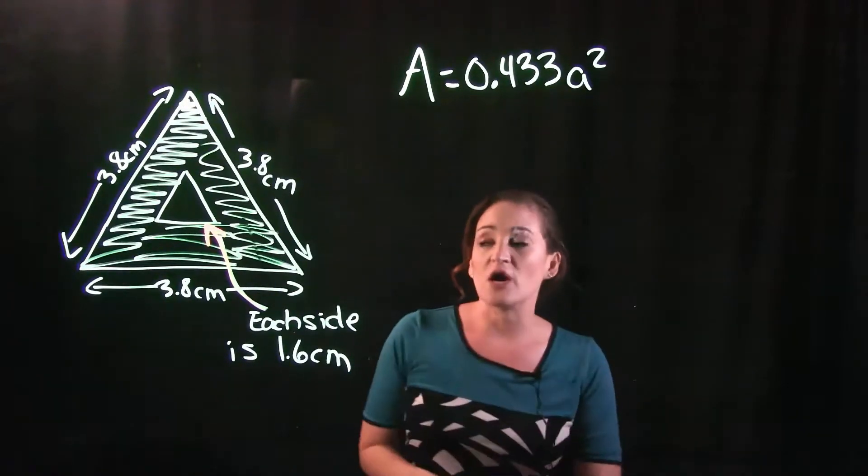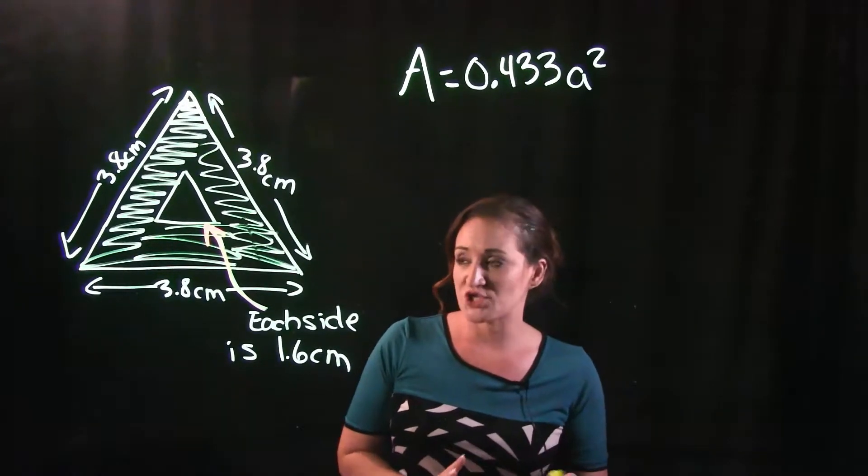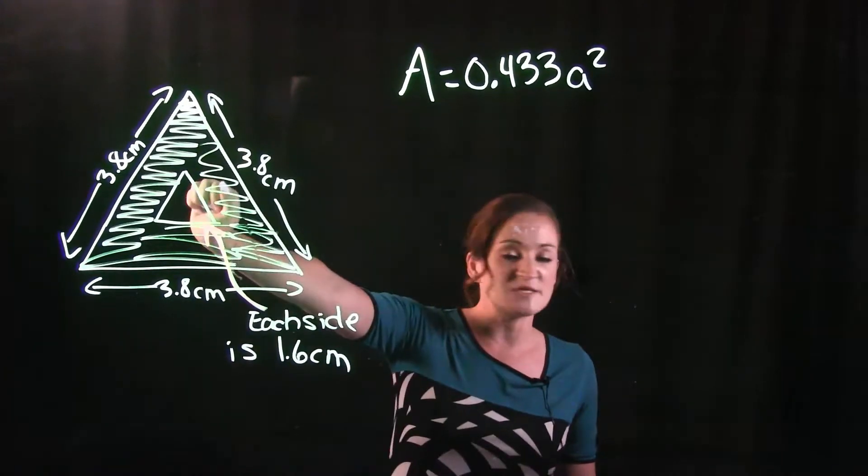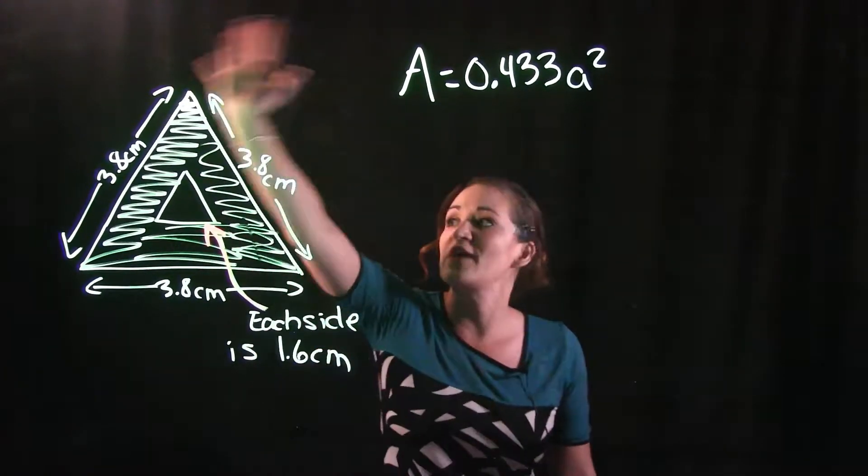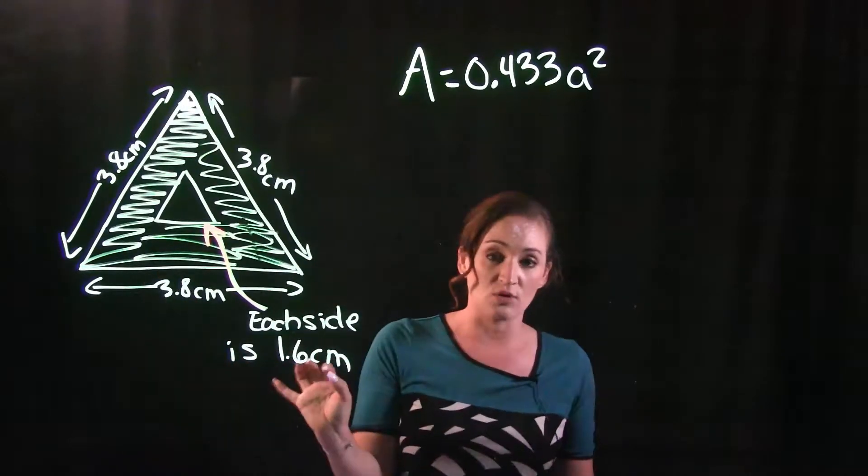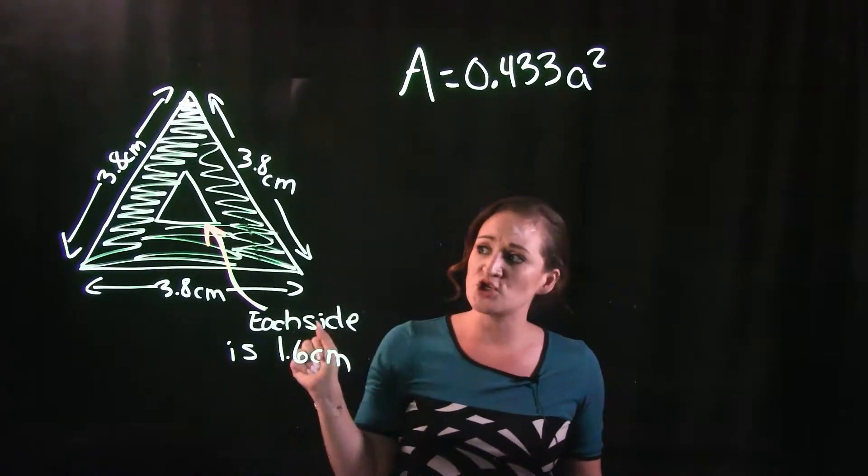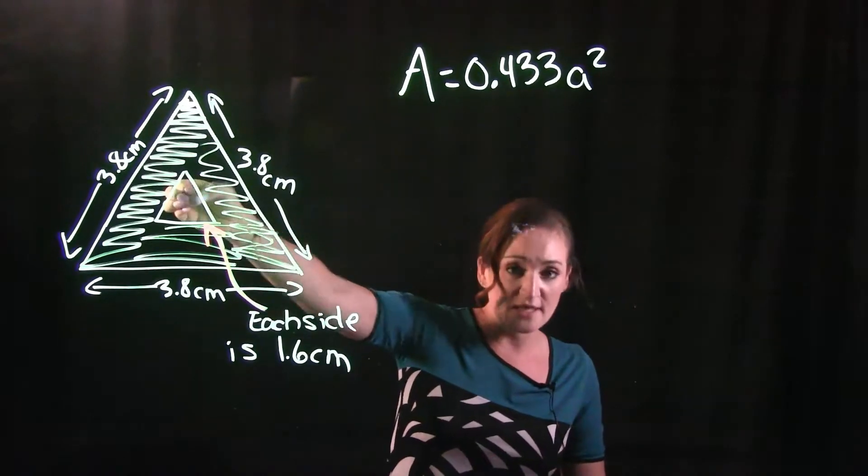What we're going to do here is kind of like a three-part question. First, we're going to pretend that this middle piece does not exist, and we're going to find the area of this big triangle here. Then part two, we're going to find the area of the middle piece.